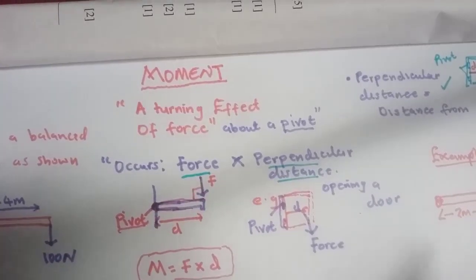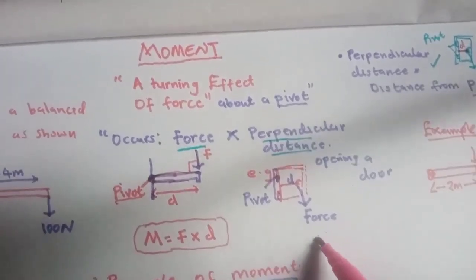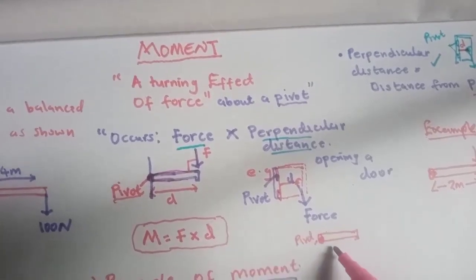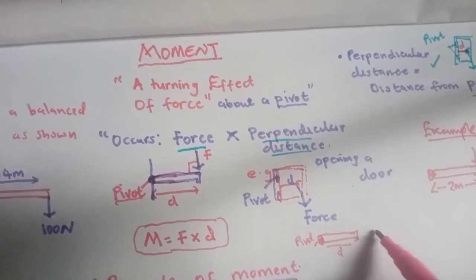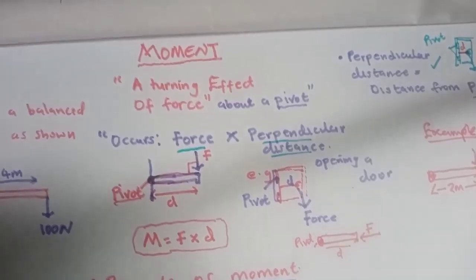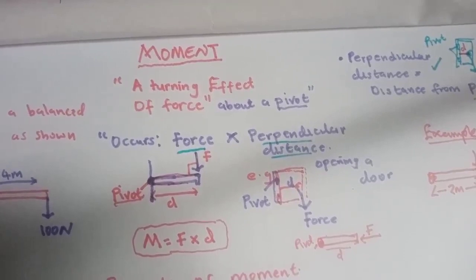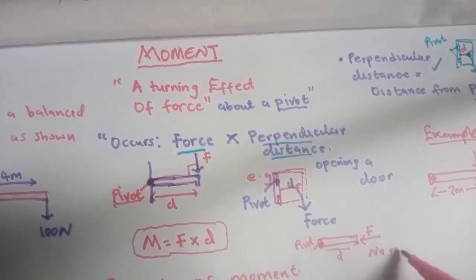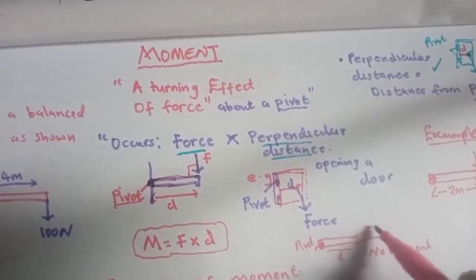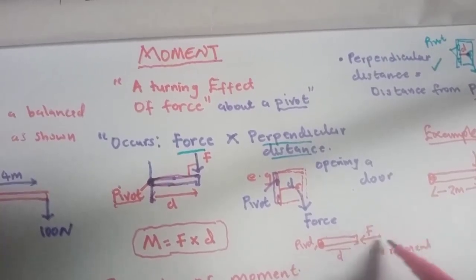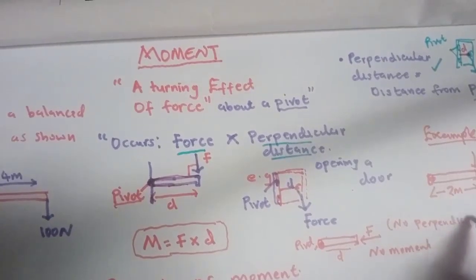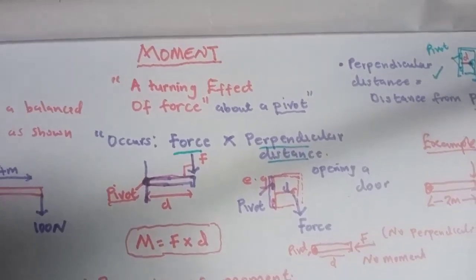In a case where you have the point of attachment here — your pivot — and the object here, this is the perpendicular distance. Now, if the force acts along the direction of the object, there will be no moment because the force is simply going to push the object. There is no perpendicular distance, so there is no moment.